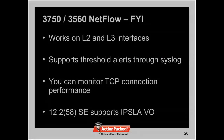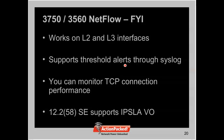Some caveats and observations: performance monitor works on both layer two and layer three interfaces, which is pretty cool and allows you to see inter-VLAN traffic. There's thresholding capability with alerts — you can configure a threshold on parameters like jitter or lost packets and send alerts via syslog to a syslog server. You can also monitor TCP connection performance on a server to see what kind of TCP connection performance you're getting.